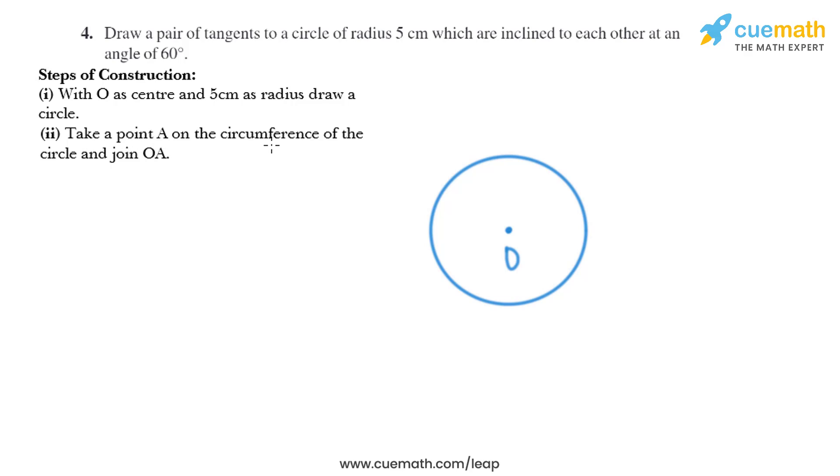Now in the next step, take a point A on the circumference of the circle and join OA. So we'll take a point A on the circumference of the circle and then we need to join O and A.